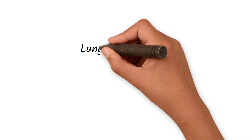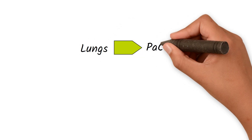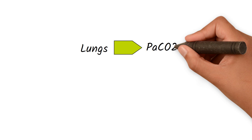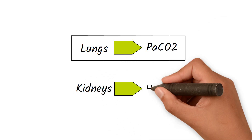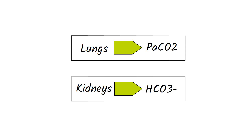The lungs correct the blood pH by regulating the partial pressure of carbon dioxide in the blood, while the kidneys correct blood pH by regulating the bicarbonate level in the blood. Usually, respiratory compensation happens faster — it may start within minutes, whereas renal compensation may take days.